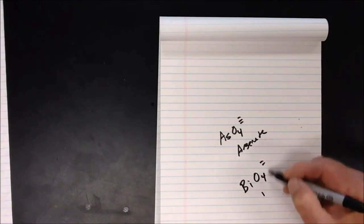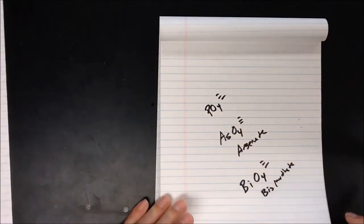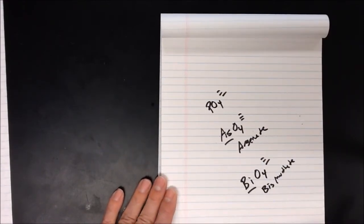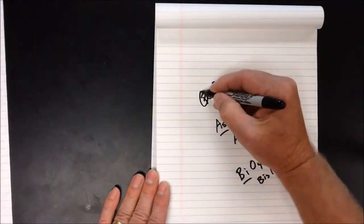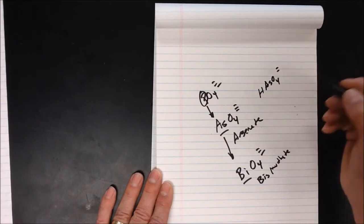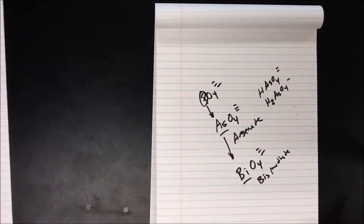We can also apply family association to phosphate. Arsenic in the same family gives AsO4 with a negative three charge — arsenate. Bismuth gives BiO4 — bismuthate. Nitrogen, also in that group, follows a different pattern due to electron orientation. We can also place hydrogen with these: HASO4 minus two is monohydrogen arsenate, and H2AsO4 minus one is dihydrogen arsenate. The same applies to bismuthates.